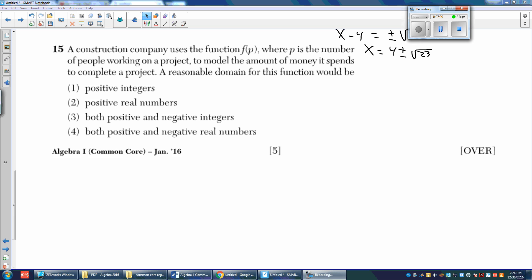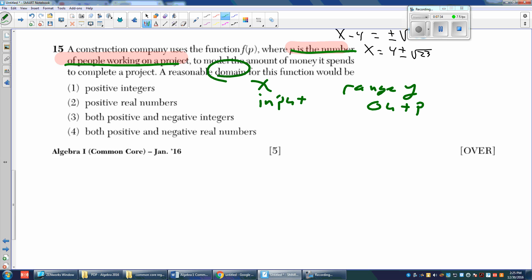Let's go on to number 15. A construction company uses the function f(p), where p is the number of people working on a project. If you don't have a highlighter, underline it. P is the number of people working on a project to model the amount of money it spends to complete the project. A reasonable domain for this function. Domain is the X value. Range is the Y value. Domain is input. Range is output.